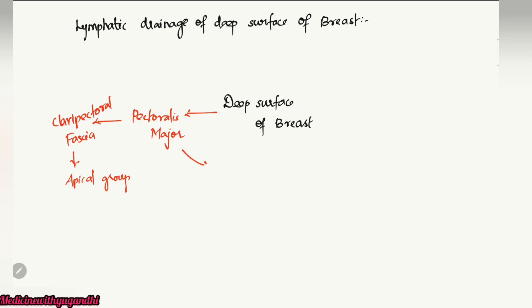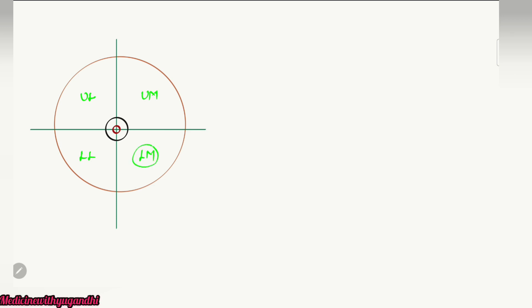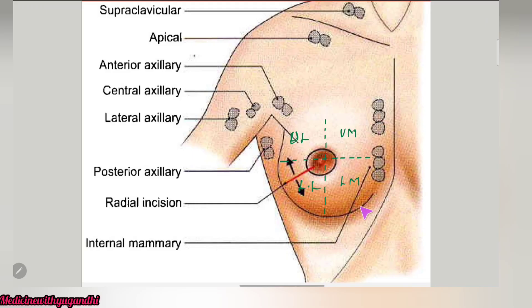Alternatively, lymphatics from the deep surface pierce the pectoralis major muscle and drain into the internal mammary group of lymph nodes. The lymphatics from the lower and inner quadrants of the breast — the lower medial group — drain into the subdiaphragmatic or subperitoneal group of lymph nodes. This occurs by crossing the costal margin and piercing the anterior abdominal wall.